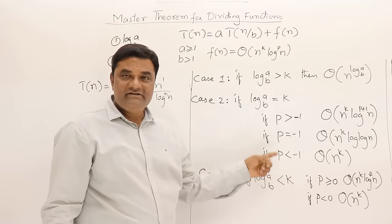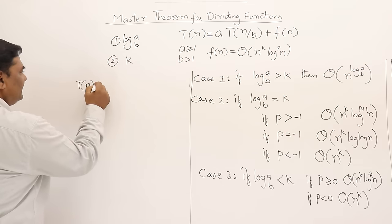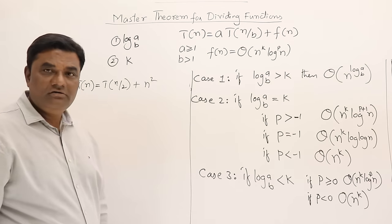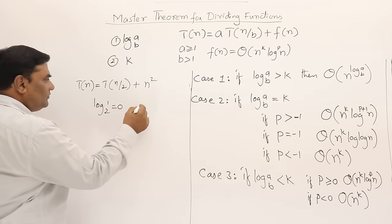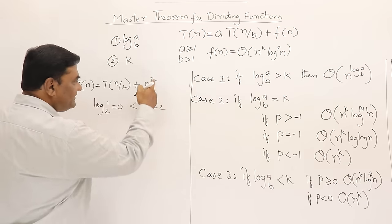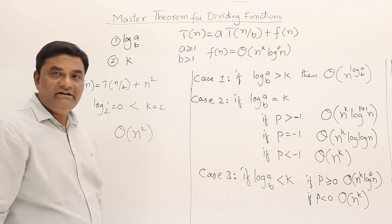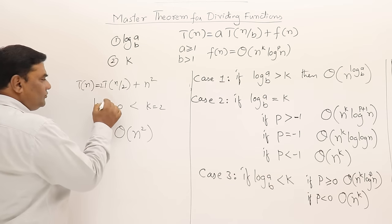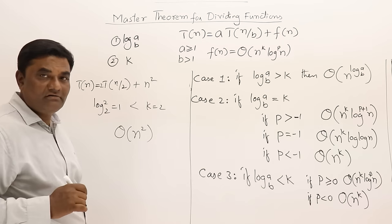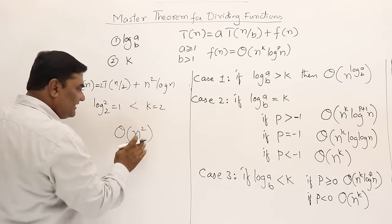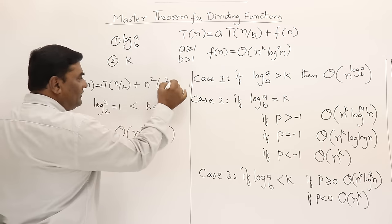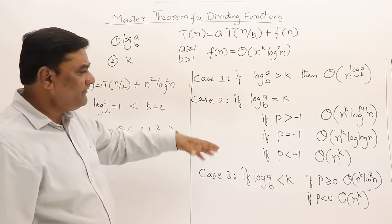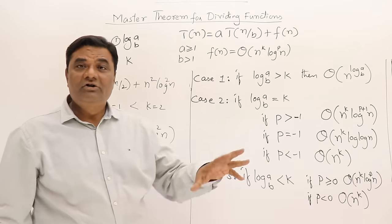These are the three sub-cases of Case 2. Now Case 3: T(n) = T(n/2) + n². log(1) base 2 = 0, k=2. Since 0 < 2, this is Case 3: answer is Theta(n²). If T(n) = 2T(n/2) + n²: log(2) base 2 = 1, still less than k=2, answer is Theta(n²). If f(n) has log n terms, take them as-is since f(n) dominates.